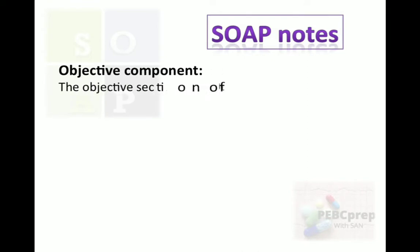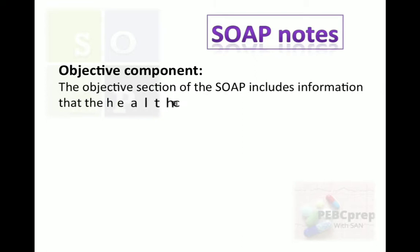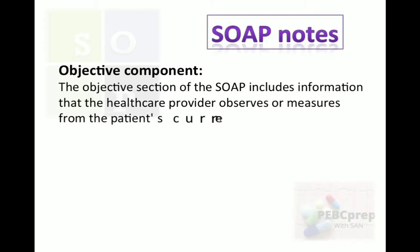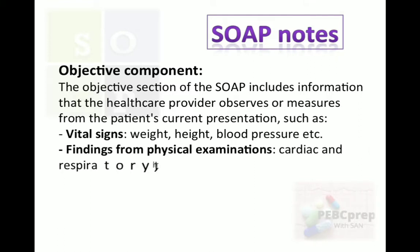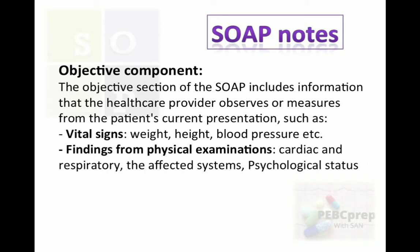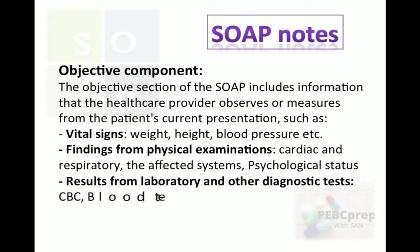Next is the objective component. The objective section of the SOAP note includes information that the healthcare provider observes or measures from the patient's current presentation, such as vital signs like weight, height, and blood pressure; findings from physical examination related to cardiac, respiratory, or affected systems, or psychological status; and results from laboratory and other diagnostic tests — for example, CBC blood test, LFTs, MRI, CT scan. All results of these tests come under the objective component.